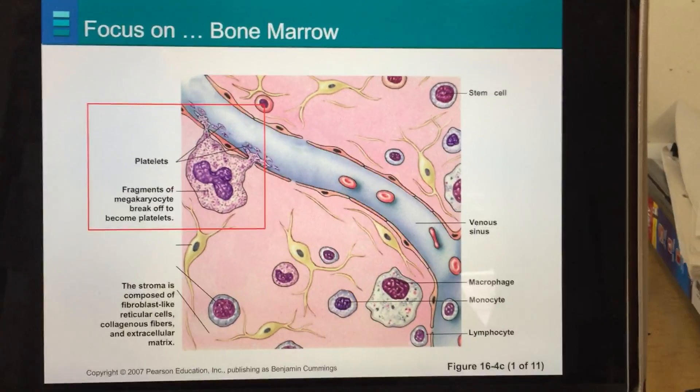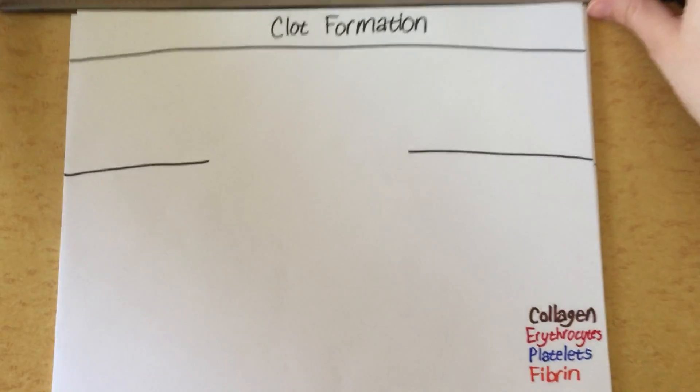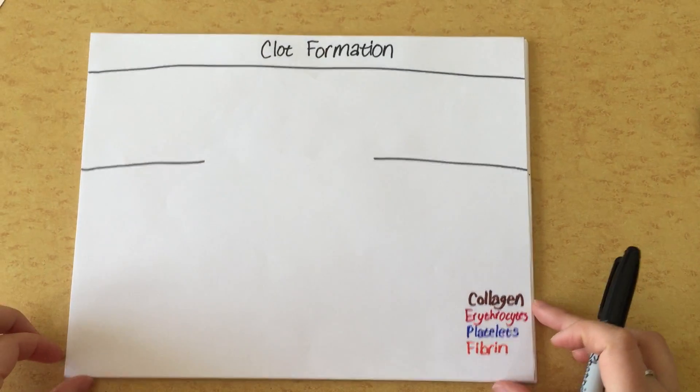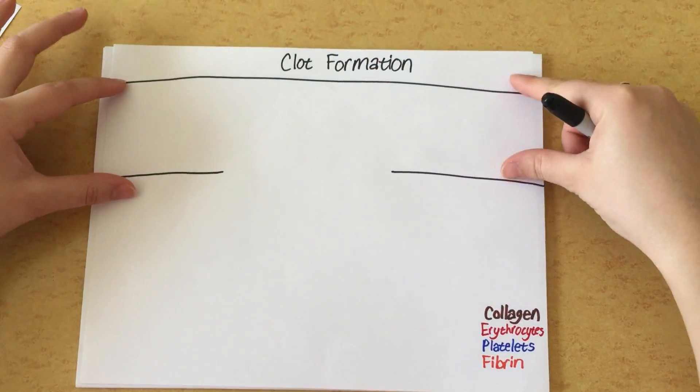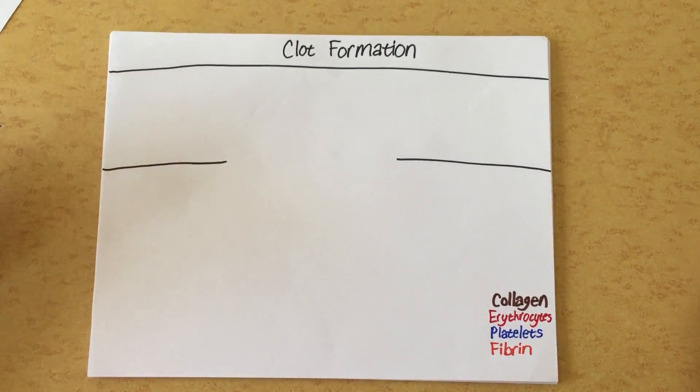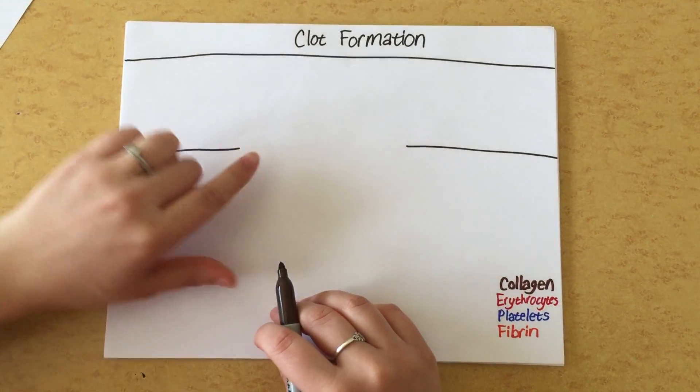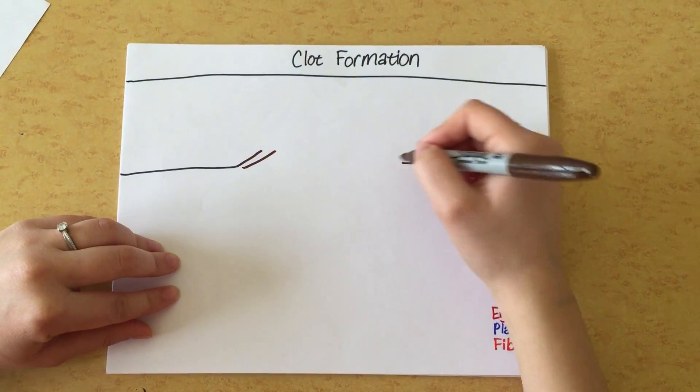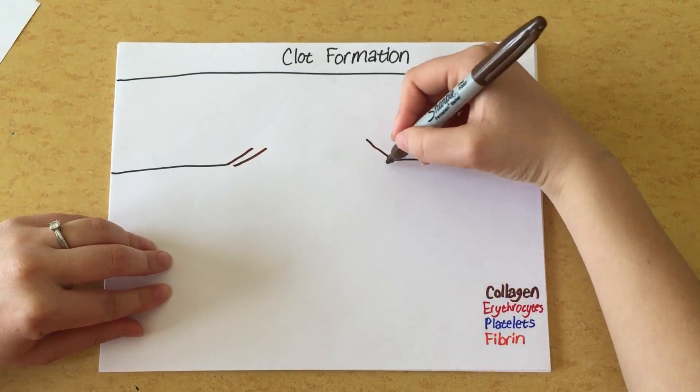Let's now look a little more in depth at what thrombocytes or platelets help with. They help with clot formation. So here we'll have a blood vessel running across the page that's been broken. Now the first thing that happens in the formation of a clot is that when this blood vessel wall is broken, there's some exposed collagen. So we'll have collagen here in brown.